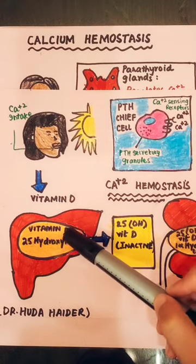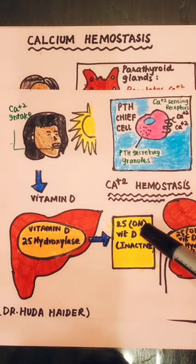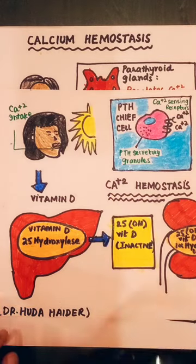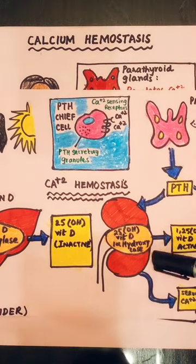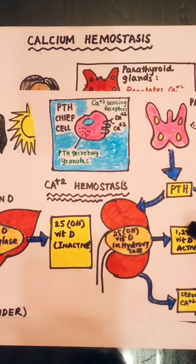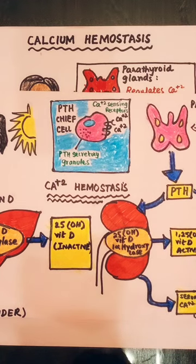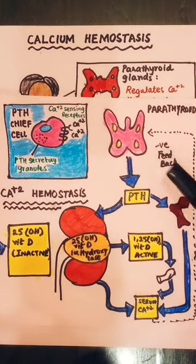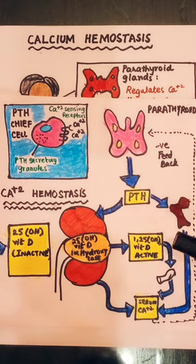Vitamin D undergoes 25-hydroxylation in the liver to form an inactive intermediate form, which is then further activated. This 25-hydroxylation step in the liver is key to the vitamin D activation pathway.